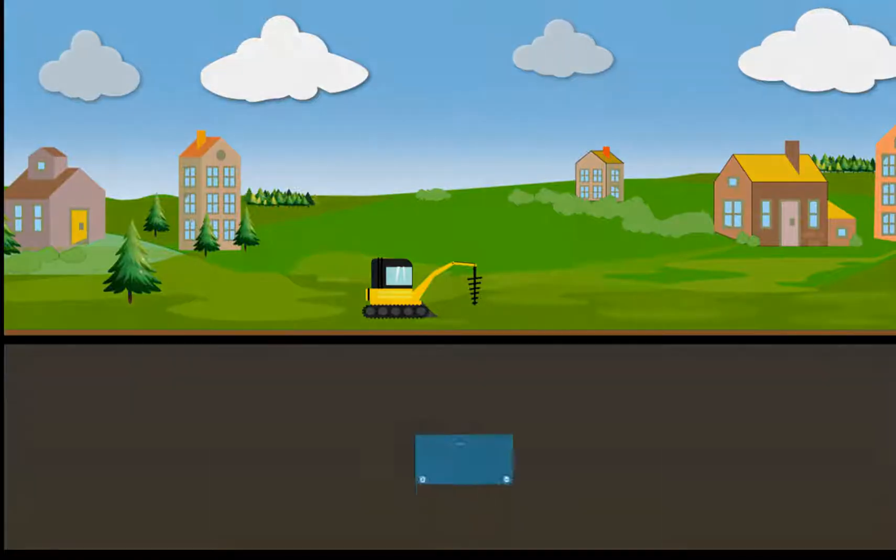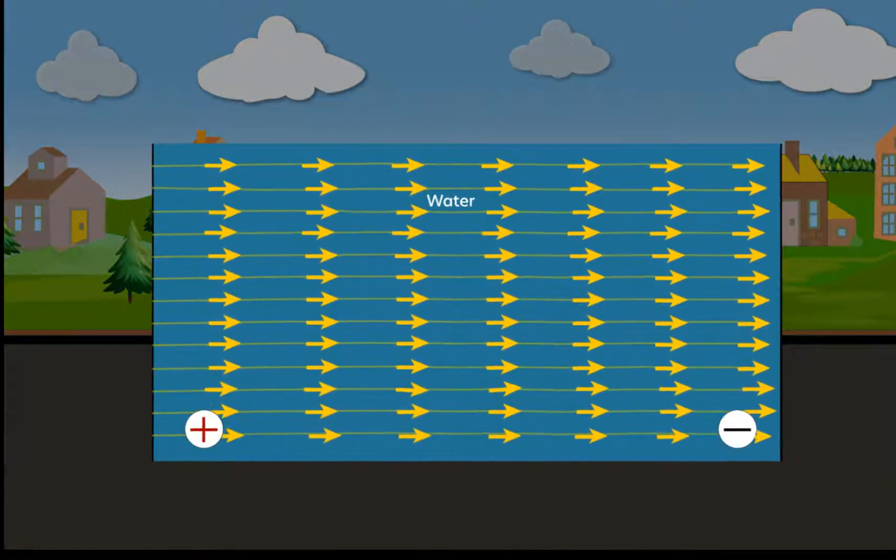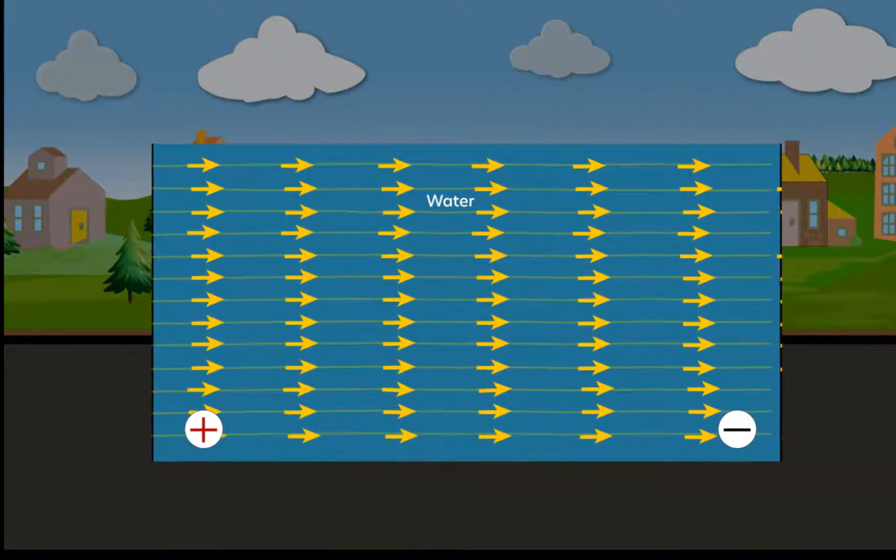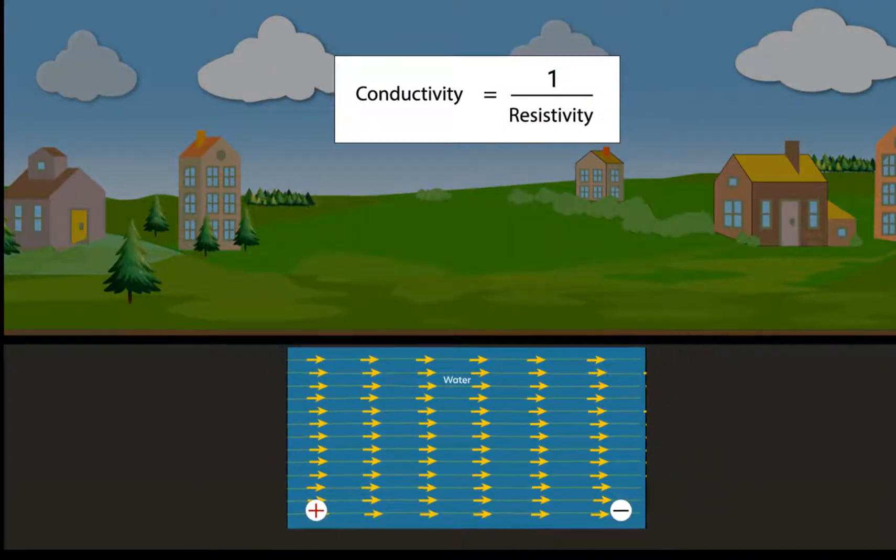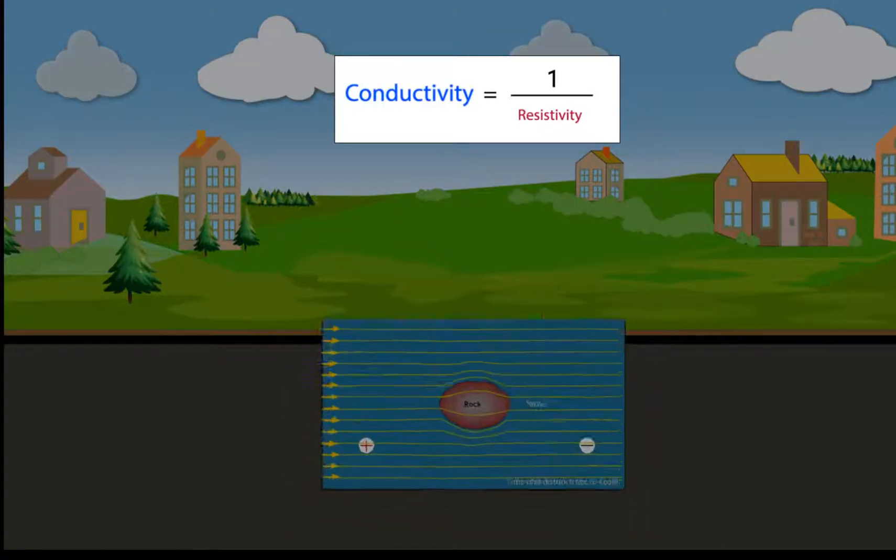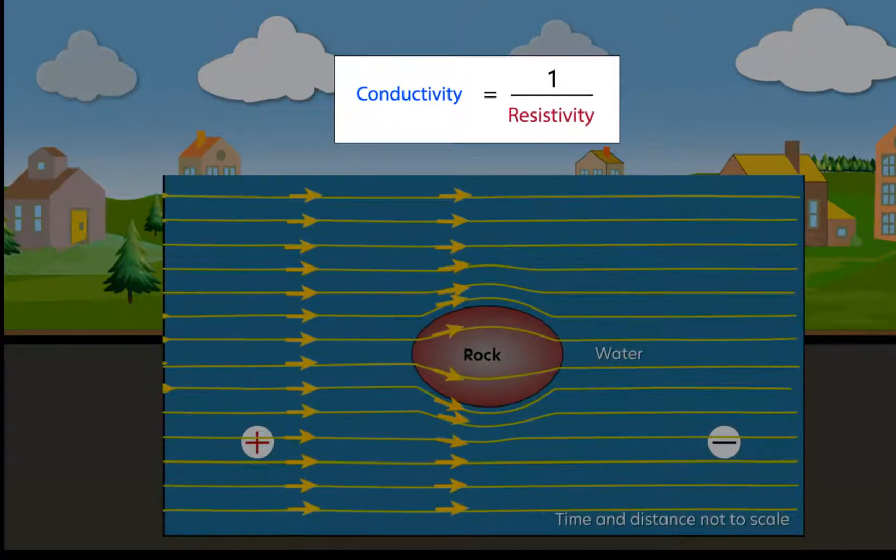Remember, electrical currents flow easily through water because water does not provide much resistance to electrical currents. Again, water has low electrical resistivity. In contrast, solid rock has a high resistivity.